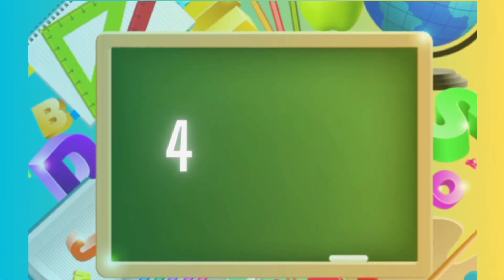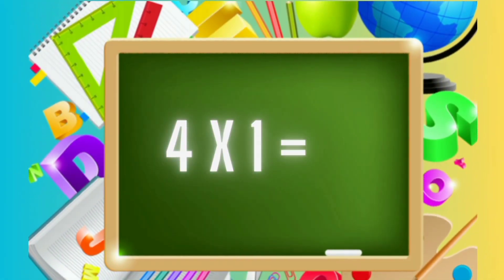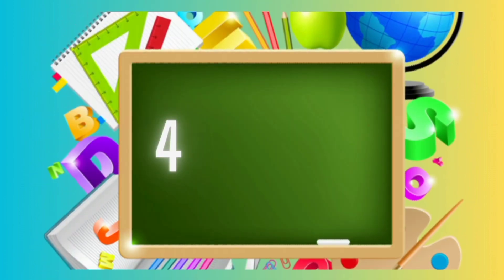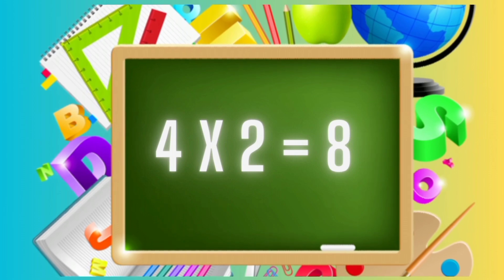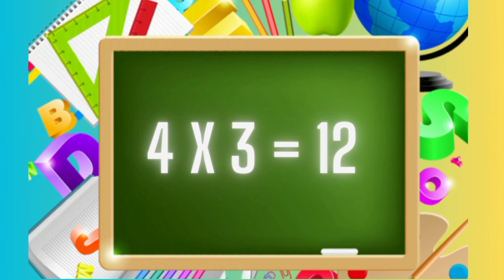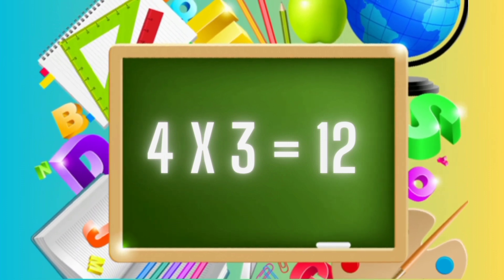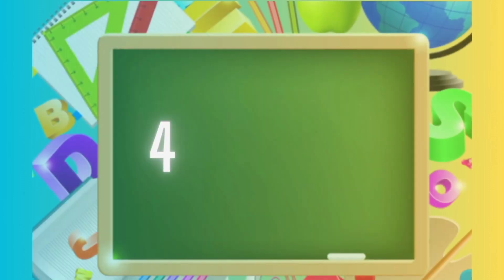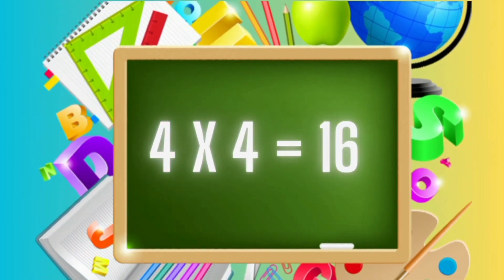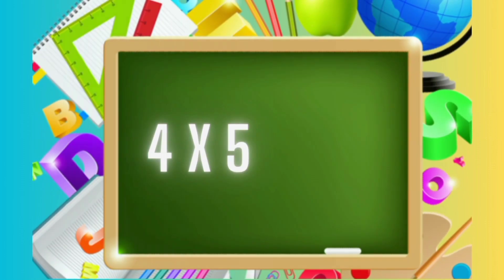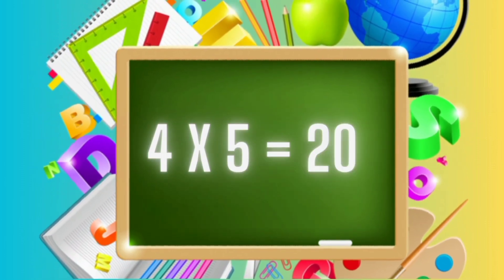Four ones are four. Four twos are eight. Four threes are twelve. Four fours are sixteen. Four fives are twenty.